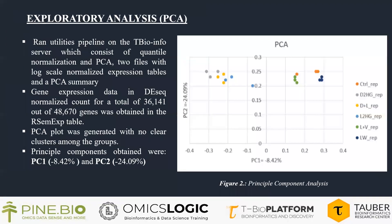The first and foremost analysis performed was PCA, an exploratory analysis. I ran the utilities pipeline on the tbioinfo server, which consists of quantile normalization and PCA, producing two files: a log-scale normalized expression table and a PCA summary. I filtered out genes from the expression table, and 36,141 genes remained out of 48,670. The PCA plot was generated with no clear clustering among the groups.